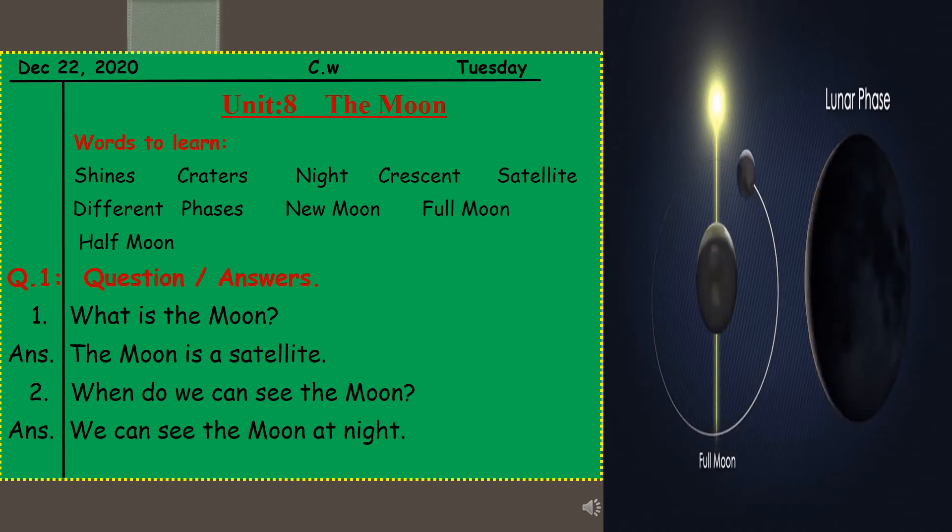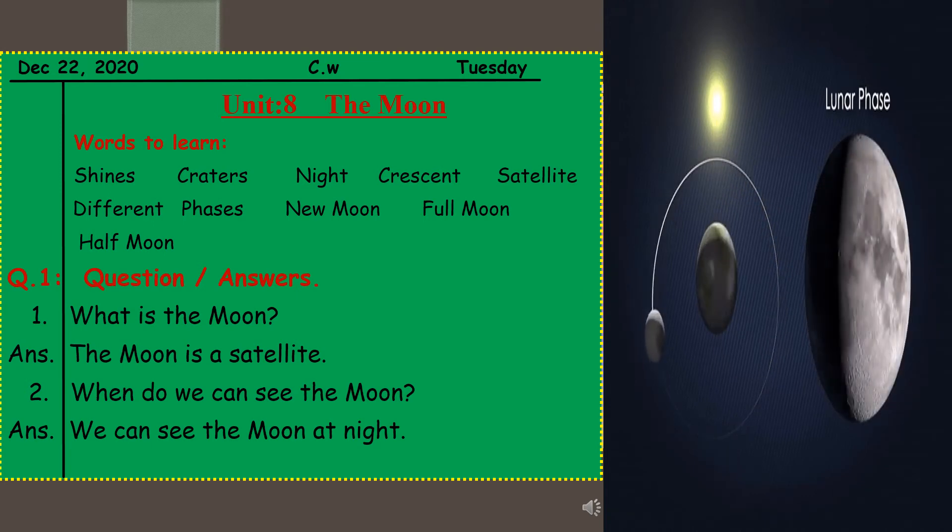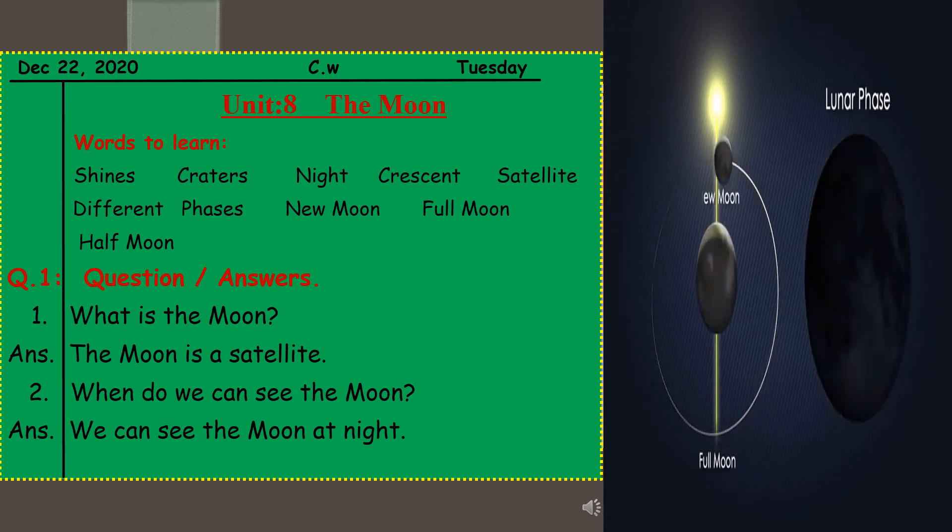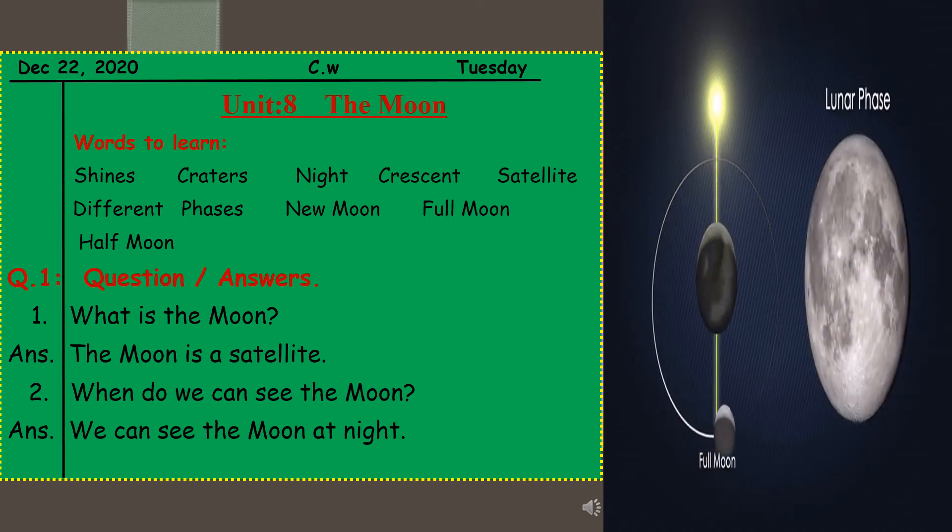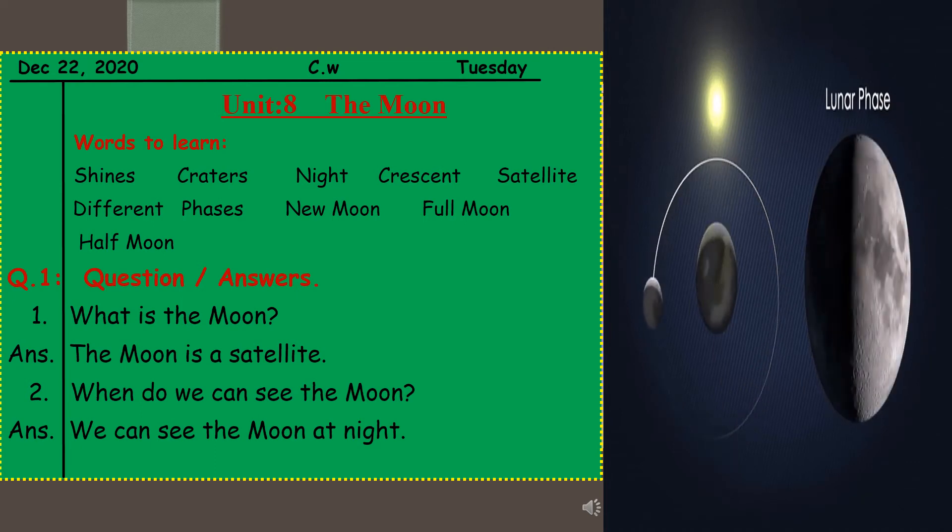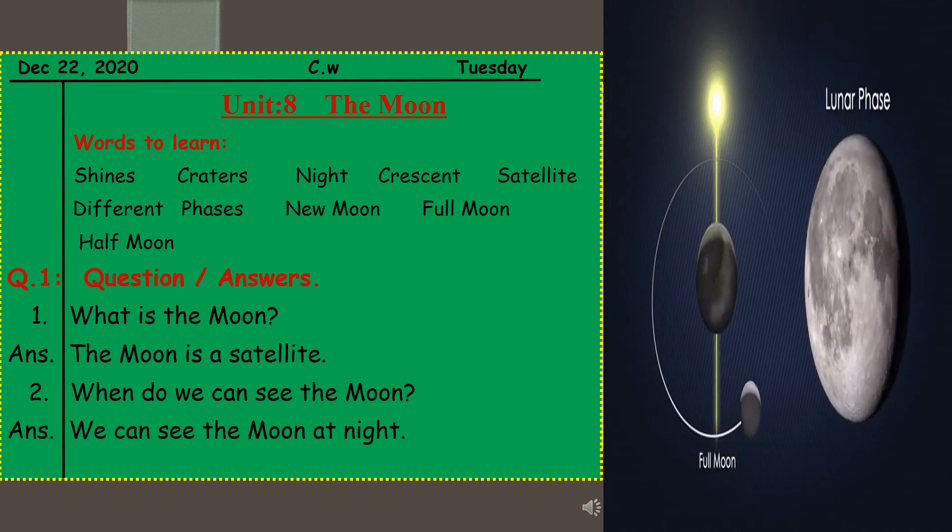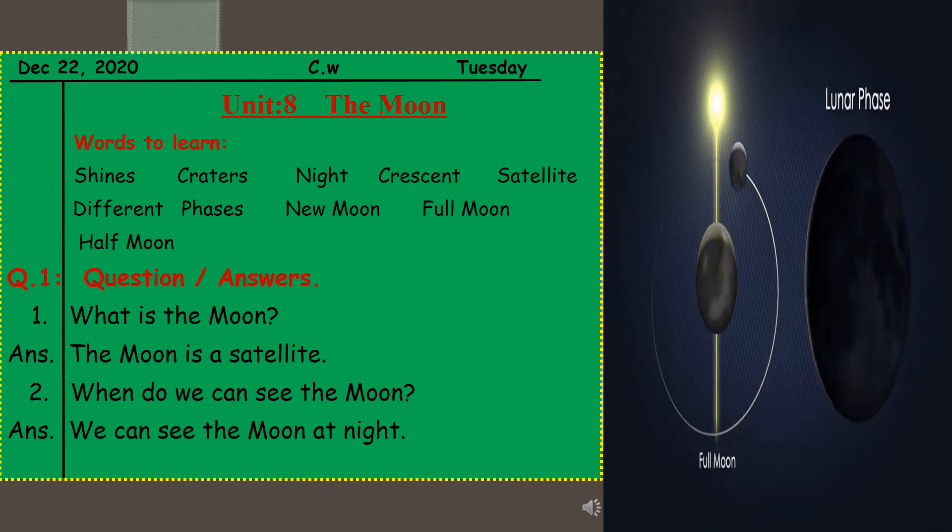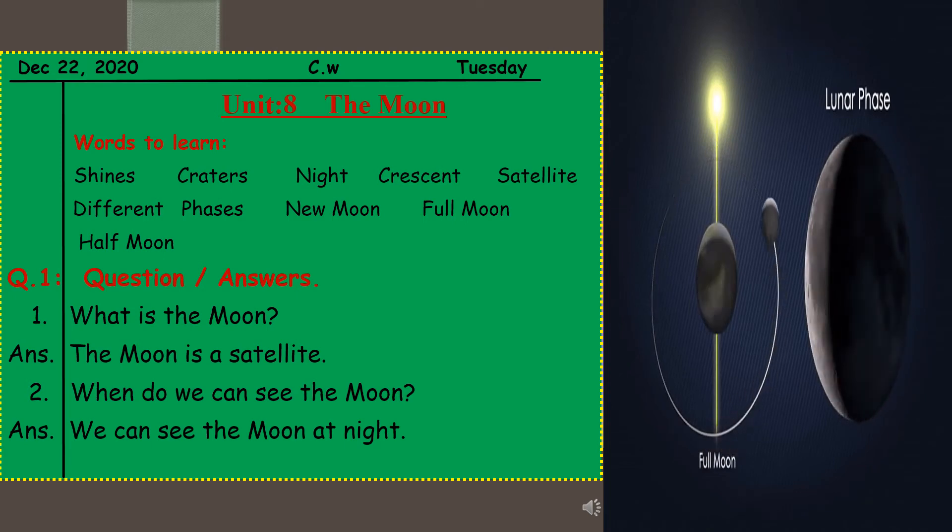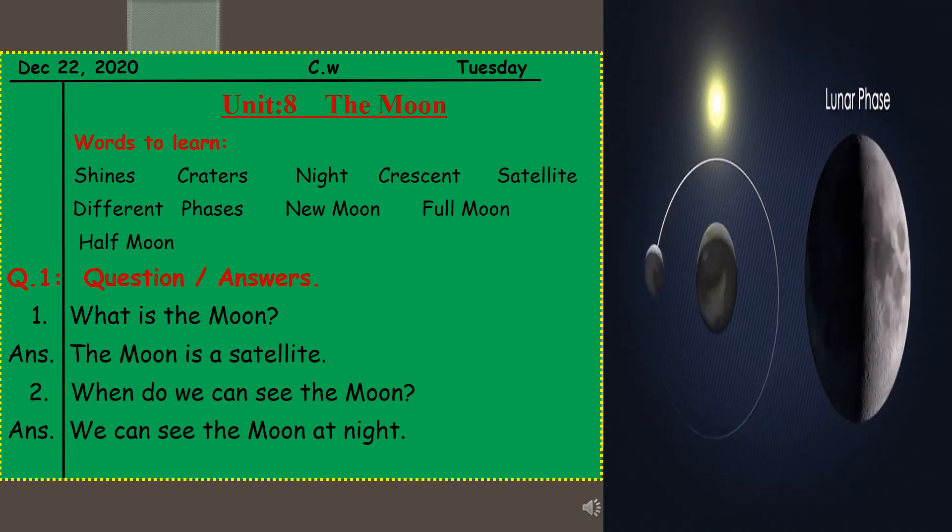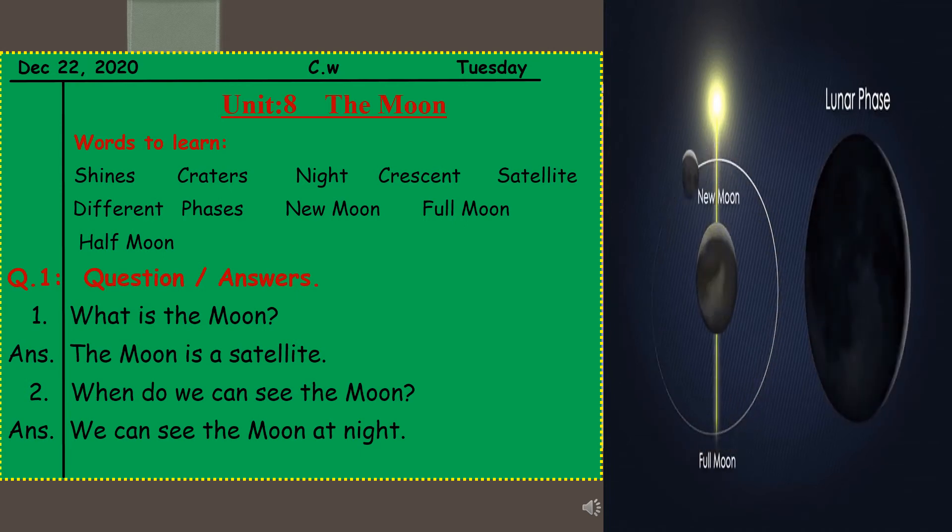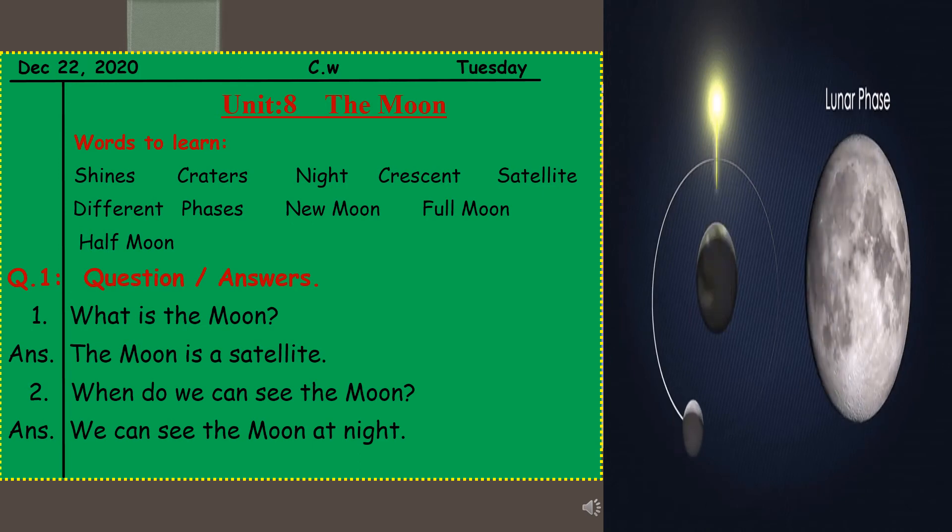Next word is new moon. You have learned that, I told you, you have to remember the names of three phases you have learned in this chapter: new moon, full moon, and half moon. So you have to write new moon, N-E-W M-O-O-N, new moon. Full moon, F-U-L-L, full, M-O-O-N, moon. Full moon.